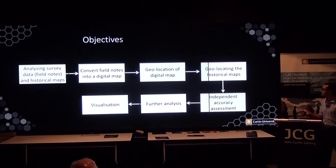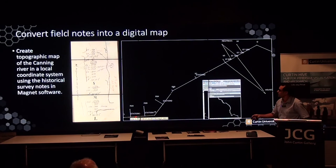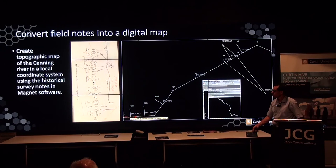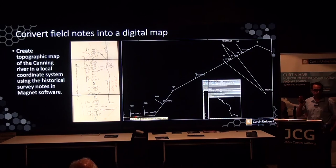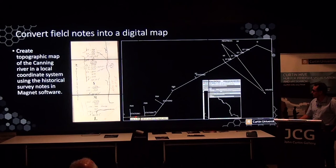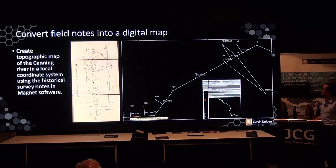The first step is to convert the survey data into a digital map. Point L is given an arbitrary coordinate, as close as possible to the actual location. With known direction from L to M and known distances, we can find the location of M. Similarly, we process all existing field data into a digital map. All of this has been done in Magnet software.